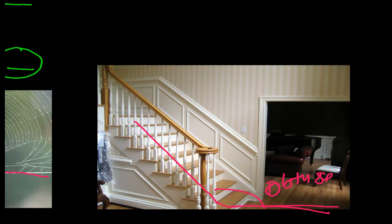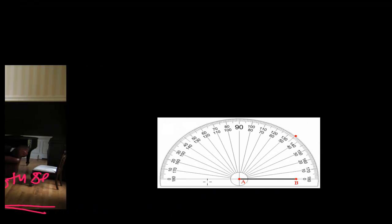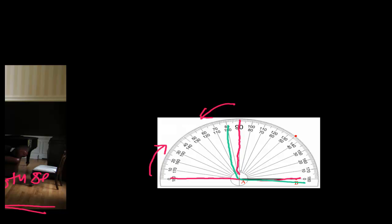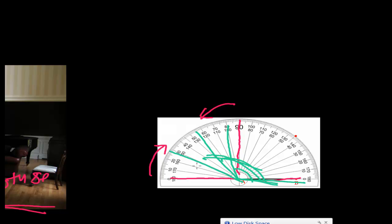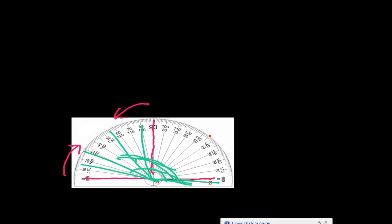On the protractor, 180 degrees is here. An obtuse angle is less than 180 but greater than 90 degrees. All such angles are obtuse angles. These are all obtuse angles. Now let's learn another type of angle.